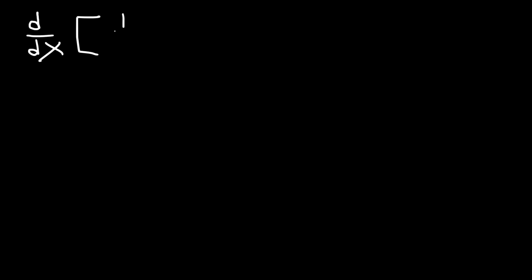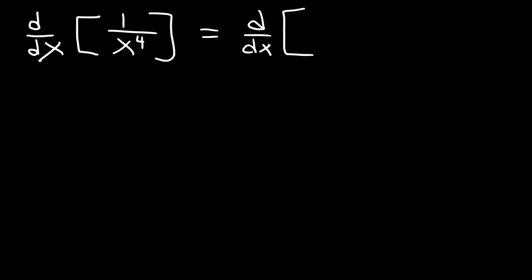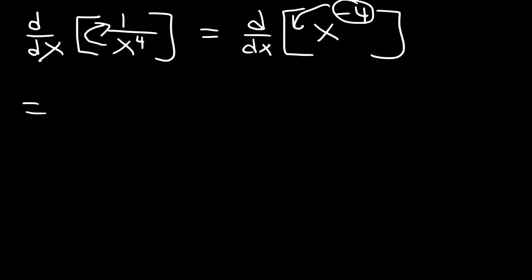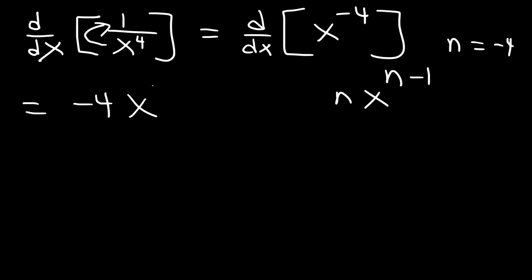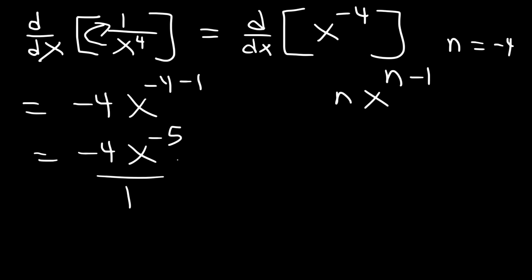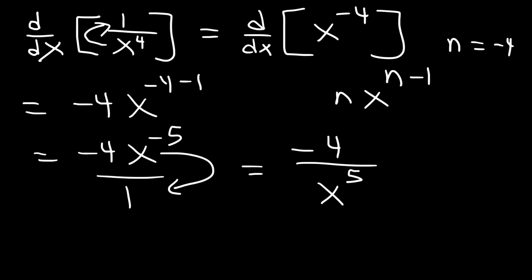Let's try one more example with rational functions: differentiate 1 over x to the fourth power. Rewrite the expression by moving the variable to the top — this becomes x to the negative 4. Using the power rule, n is negative 4, so we get negative 4x to the negative 4 minus 1, which is negative 4x to the negative 5. Moving x back to the denominator gives the final answer: negative 4 divided by x to the fifth power.